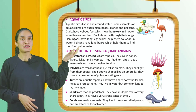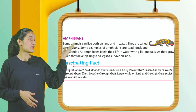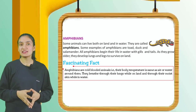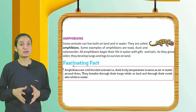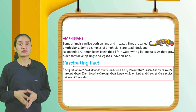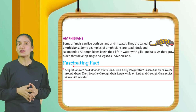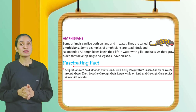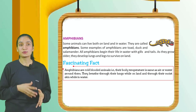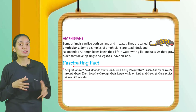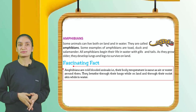Amphibians: Some animals can live both on land and in water — they are called amphibians. Some examples are toads, frogs, and salamanders. All amphibians begin their life in water with gills and tails. As they grow older, they develop lungs and legs to survive on land.